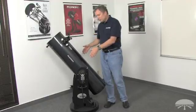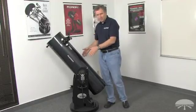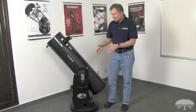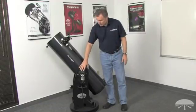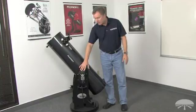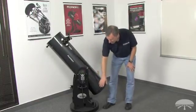The tube rides on the Dobsonian base, and this Dobsonian base is a high-tech one. It's equipped with encoders, optical encoders, and drive motors on both the altitude and the azimuth axes.